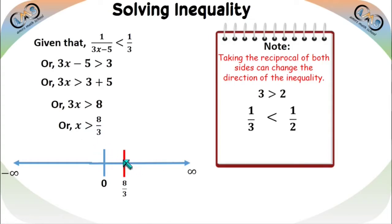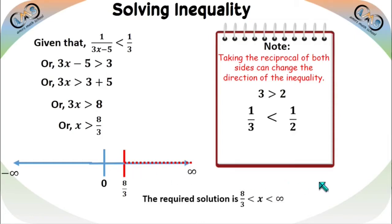Excluding 8/3 and going from 8/3 to infinity, this is the solution shown on the number line. The required solution is x ∈ (8/3, +∞), i.e., x > 8/3.